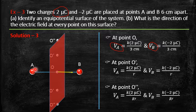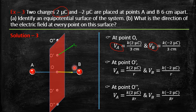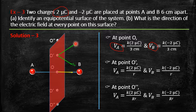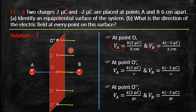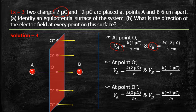At O′, A being positive produces a field radially outward (away from A), and B being negative produces a field directed toward B. The resultant of these two vectors points horizontally — from A toward B. Similarly at O″ the field also points from A to B. The key conclusion: the electric field at every point on this equipotential surface is perpendicular to the surface.